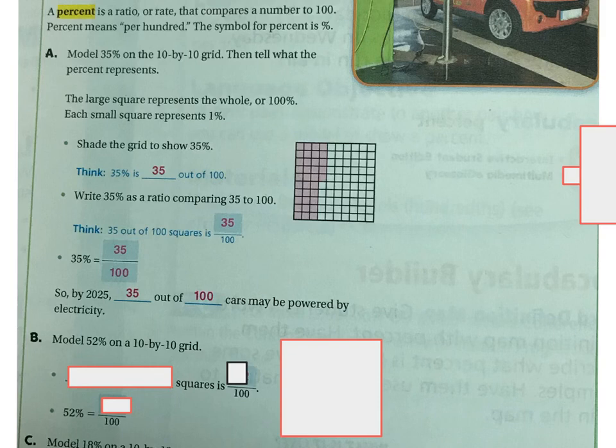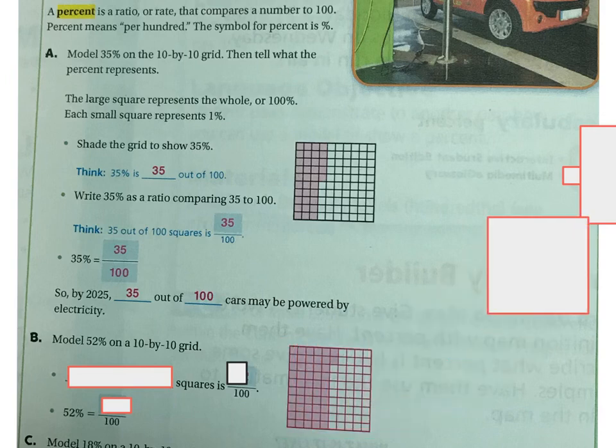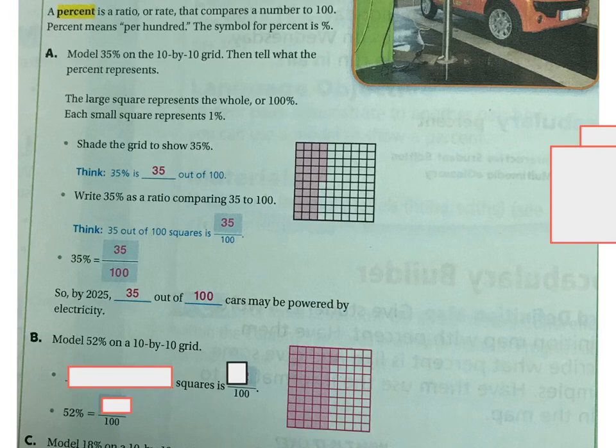Now if you're going to do the same thing, but this time we're going to model 52% on a 10 by 10 grid. So here's my 10 by 10 grid right here. I have 100 squares and I've colored in 52.